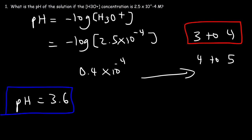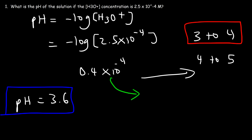That's how you can get a ballpark answer just by looking at the exponent if you don't have access to a calculator. If we type in negative log of 0.4 times 10 to the minus 4, that gives a value of 4.4, which is between 4 and 5.